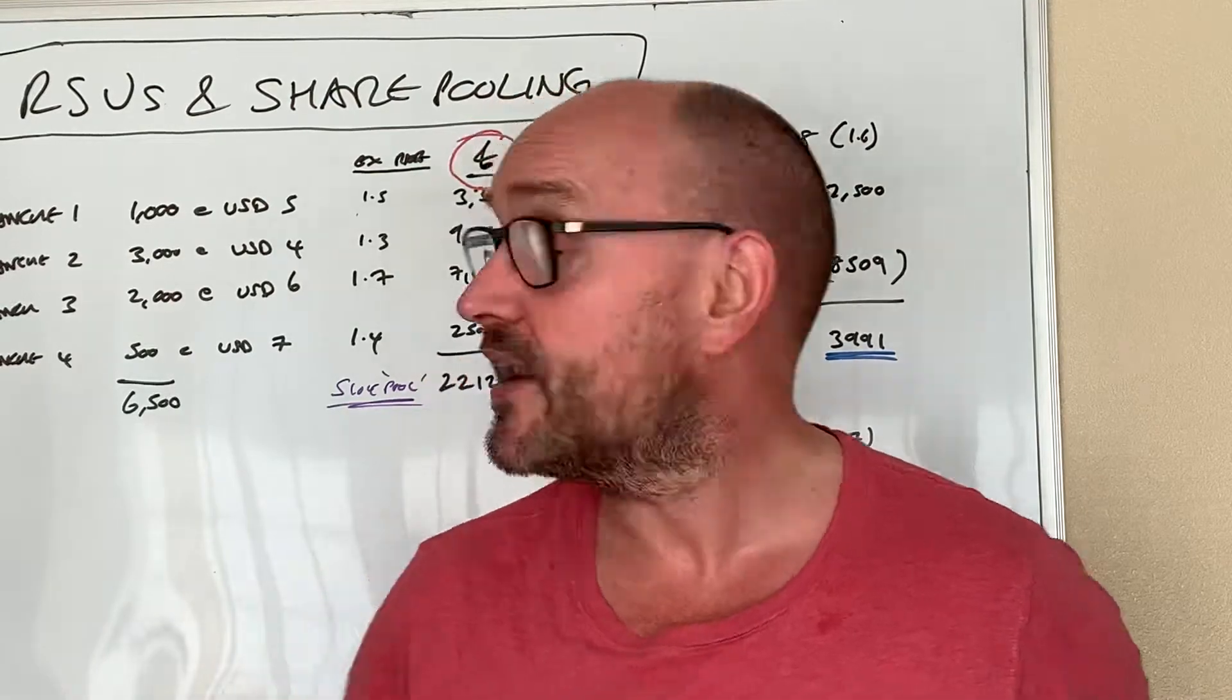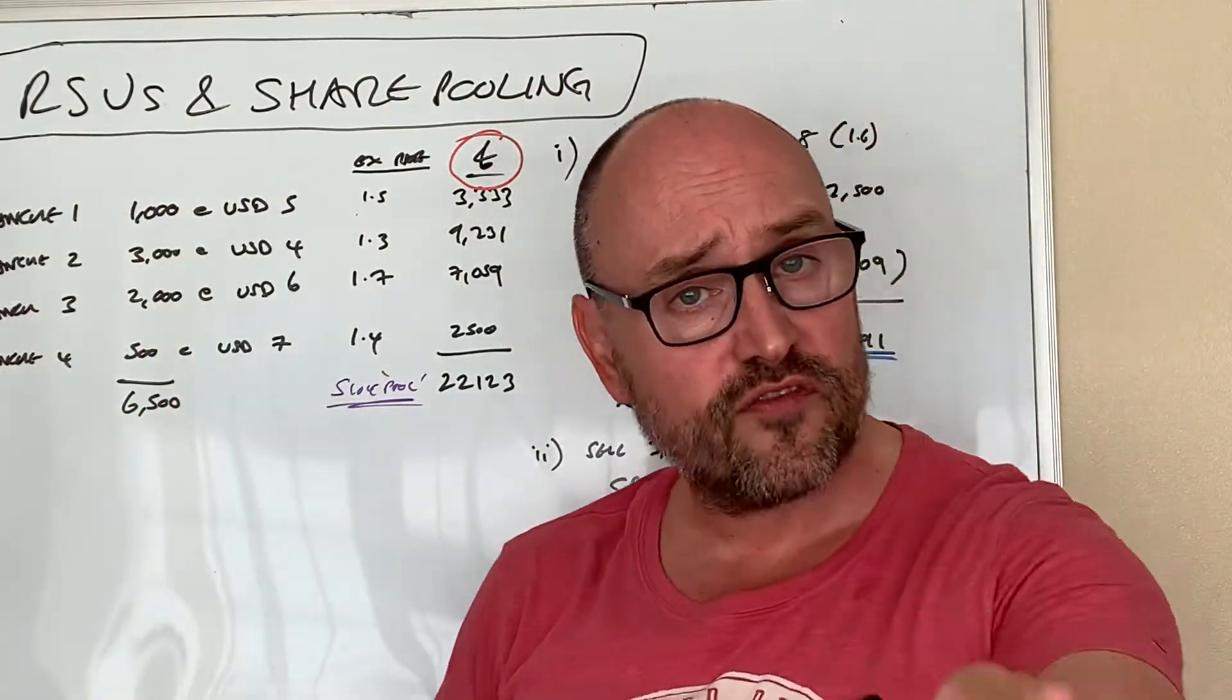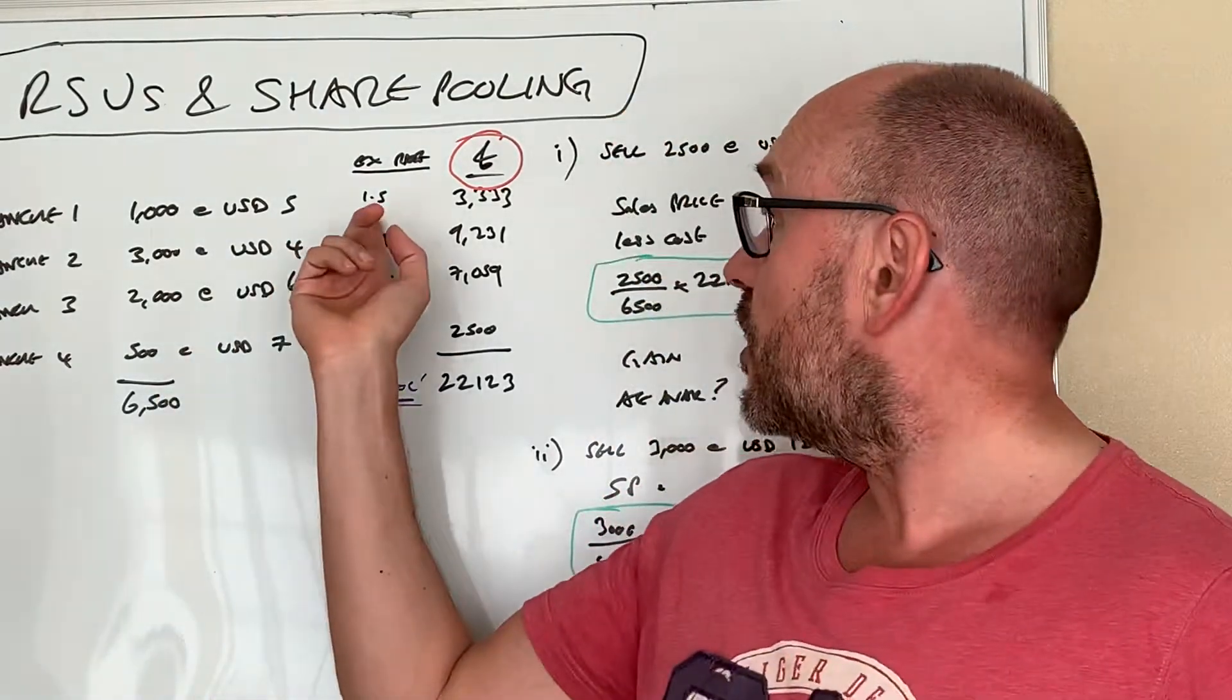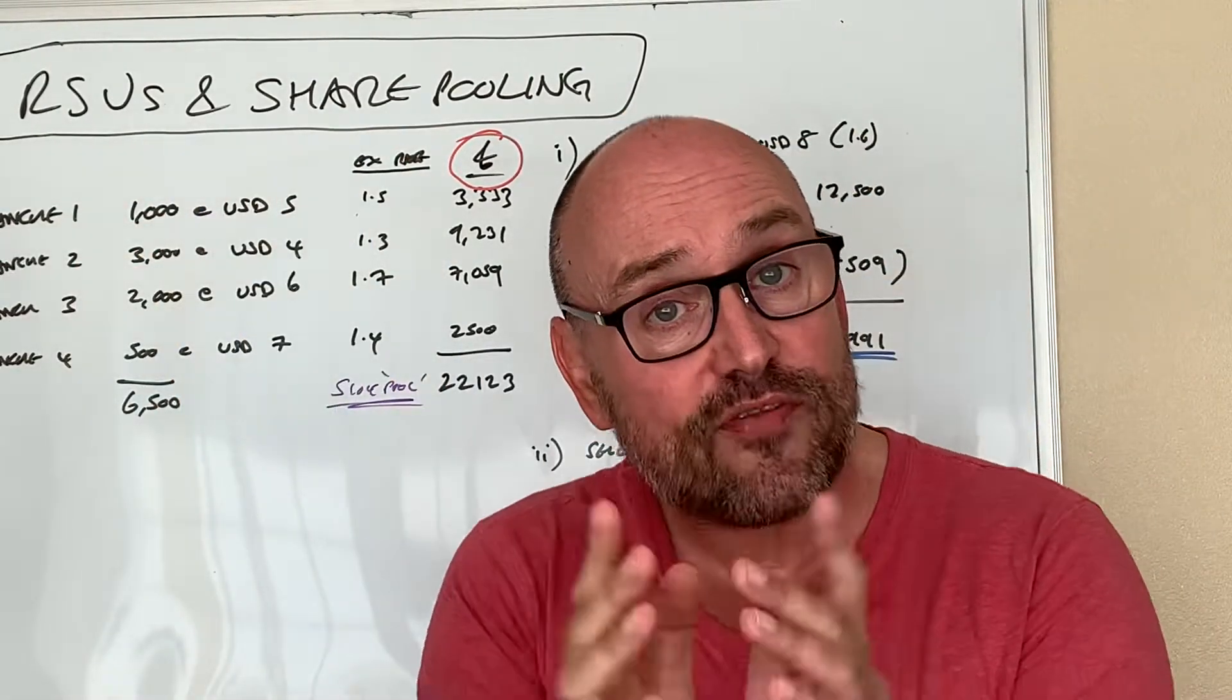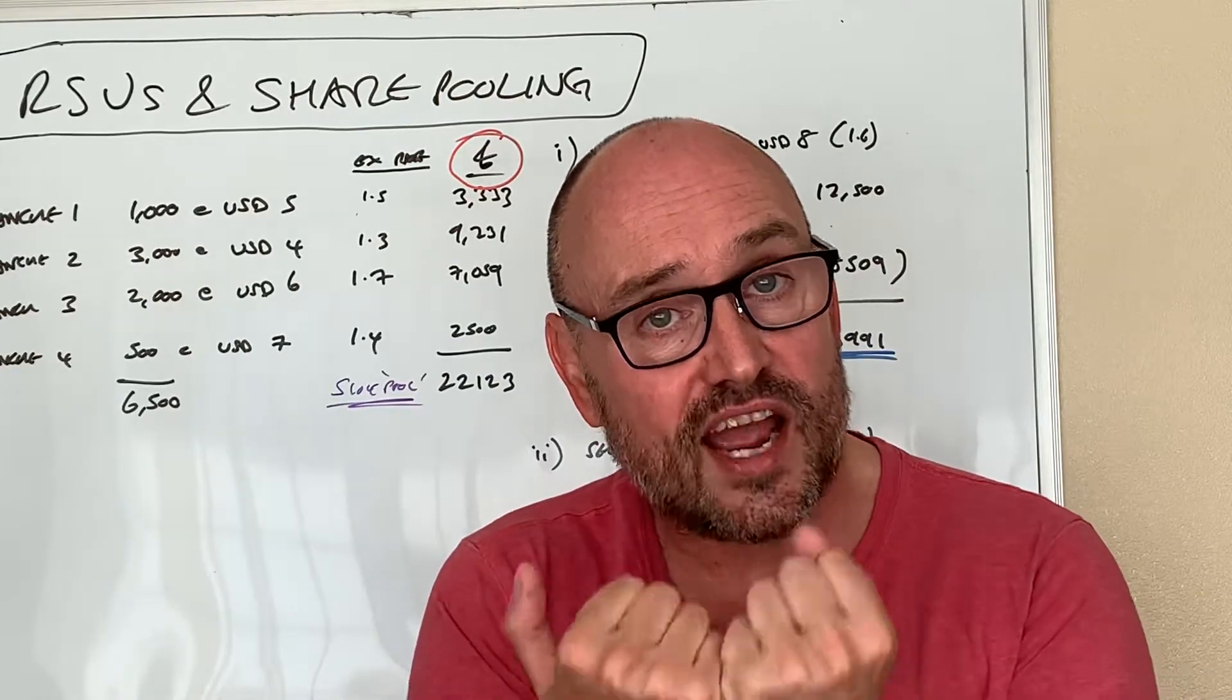We're going to look at the cost of these shares for a future capital gain. On the first tranche, a thousand shares at five dollars, the exchange rate at the time you acquired them, the time they vested, at the time they were yours, that is the exchange rate we look at.